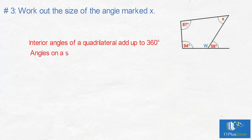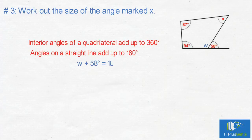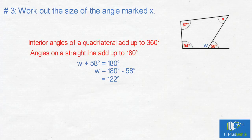For this, we use angles on a straight line, which add up to 180 degrees. We have W plus 58 degrees equals 180 degrees. W equals 180 take away 58 degrees, which equals 122 degrees. Now we can work out the value of X.